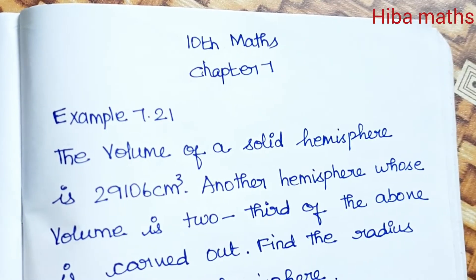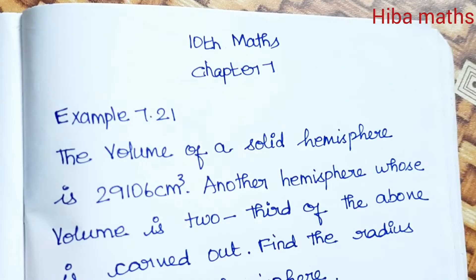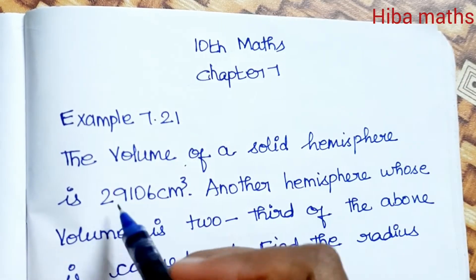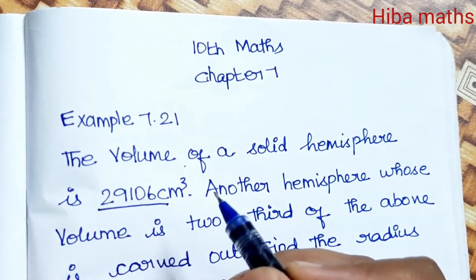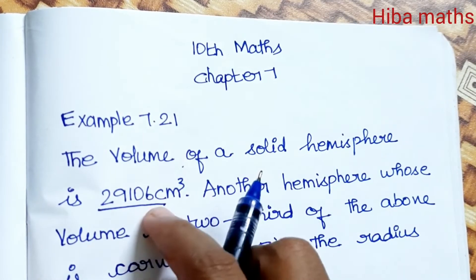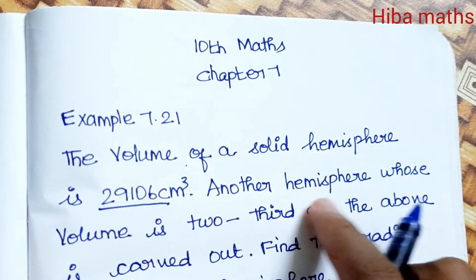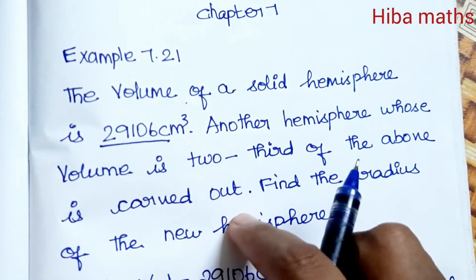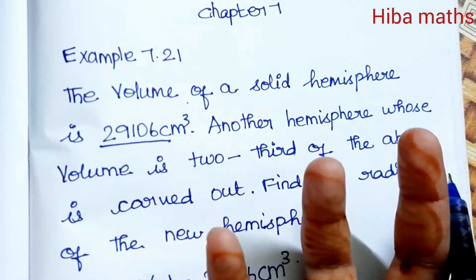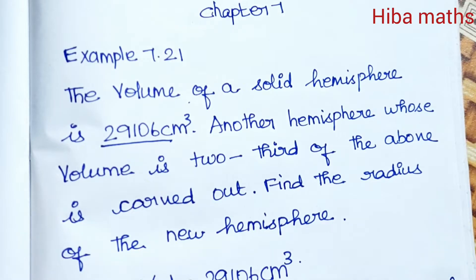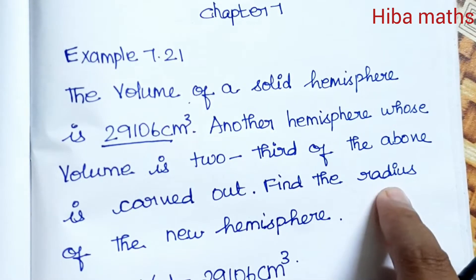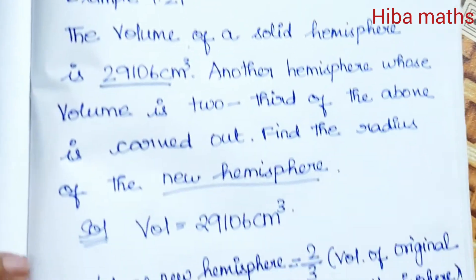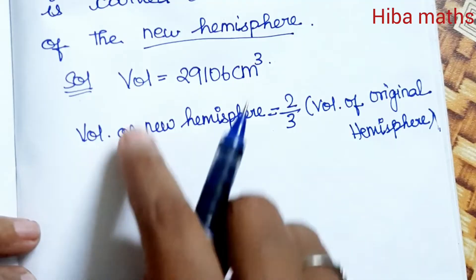Hello students, welcome to HEBA Max 10 Standard, Chapter 7, Example 7.21. The volume of a solid hemisphere is 29106 cubic centimeters. Another hemisphere, whose volume is two-thirds of the above, is carved out. Find the radius of the new hemisphere. The volume of the new hemisphere is two-thirds of the original.